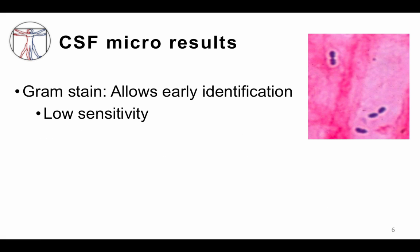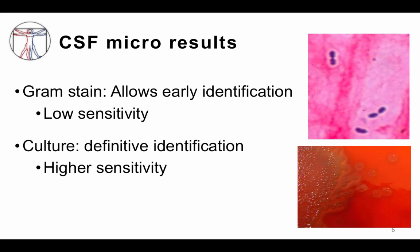Thinking about the microbiology results: the gram stain allows for early identification, but as mentioned, the sensitivity is low. Here is a gram stain of gram-positive diplococci — what do you think this is? Streptococcus pneumoniae. The culture is the most sensitive method, and you can see here the growth of bacteria on blood agar.